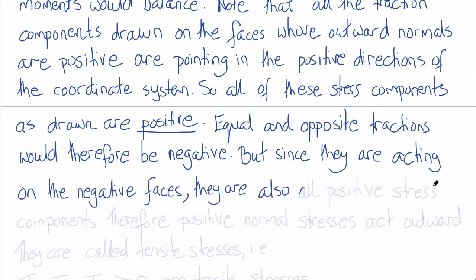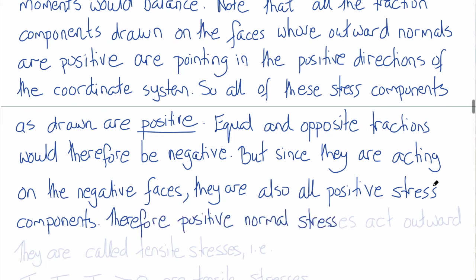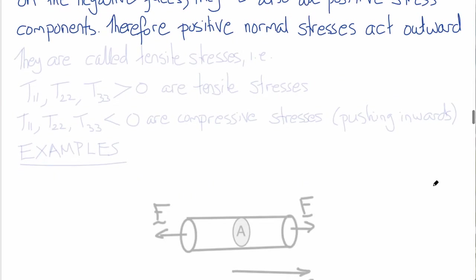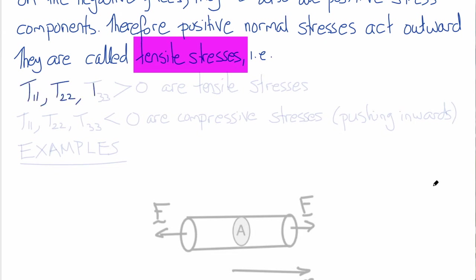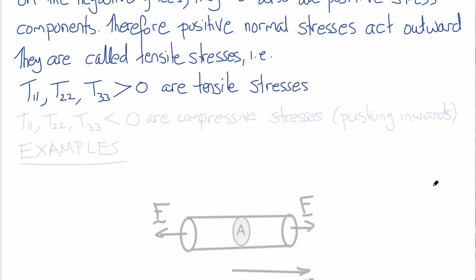The sign of the normal stresses is of particular importance. Because positive normal stresses act outwards, they're referred to as tensile stresses. When T11, T22, or T33 are greater than zero, we call these tensile stresses. When T11, T22, or T33 is less than zero, we call those compressive stresses — components that press in on the region.